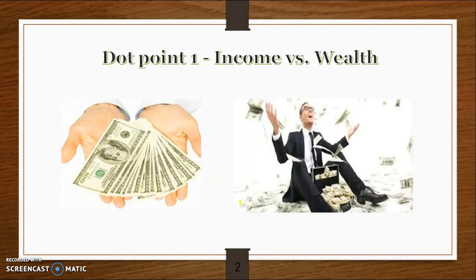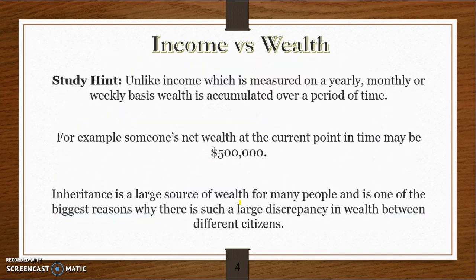Unlike income, which is measured on a yearly, monthly, or weekly basis, wealth is accumulated over a period of time. Someone's net wealth at a particular point in time might be $500,000, $600,000, or $800,000. Inheritance is a large source of wealth for many people, and it's also why there's such a large discrepancy in wealth — some people inherit a lot of money and are therefore very wealthy, while others don't inherit any.